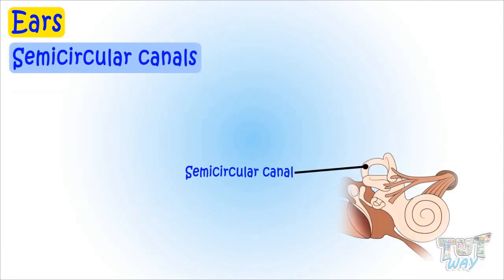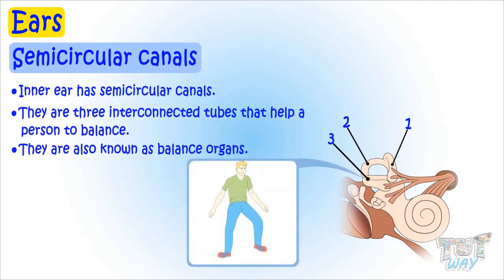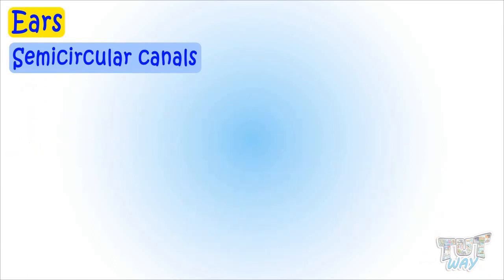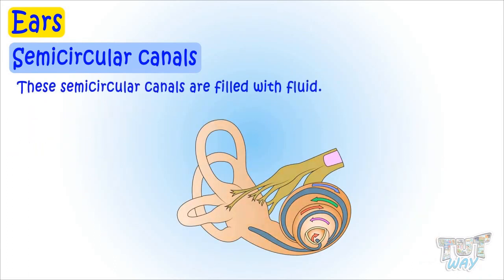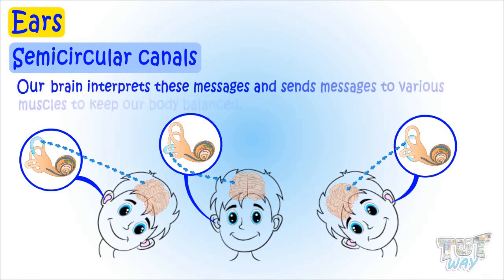The inner ear also has semicircular canals — three interconnected tubes that help a person balance, so they are also known as balance organs. These canals are filled with fluid. As our head moves, this fluid also moves and sends messages to our brain about the changing position of our head. Our brain interprets these messages and sends signals to various muscles to keep our body in balance.